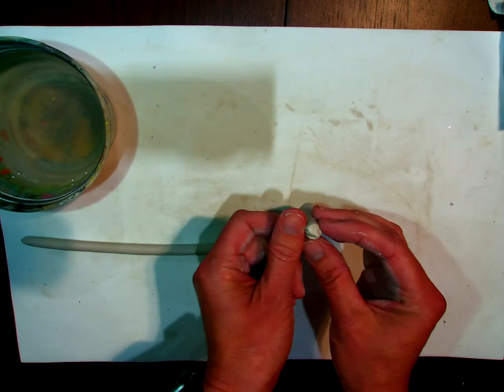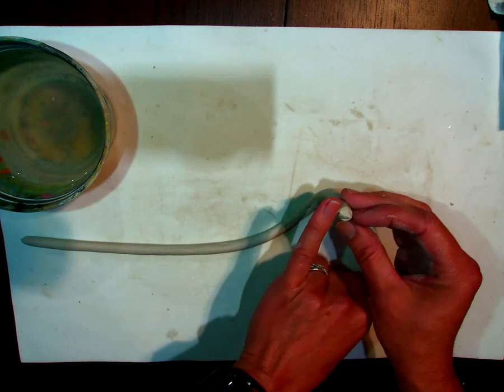You can go pretty thin with this stuff. So I'm going to go about, which finger is it? Pinky finger. Pinky finger. Thumbnail. Or, not thumbnail, pinky nail. Right? So I'm going to go about that big with this coil. And then I'm going to bring my mold back in here to place it on the mold.